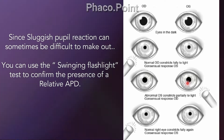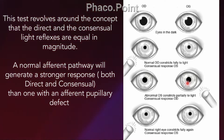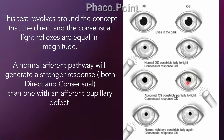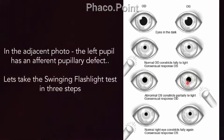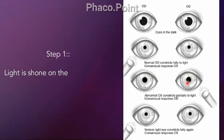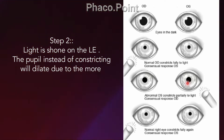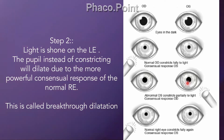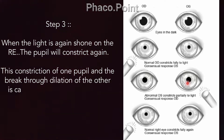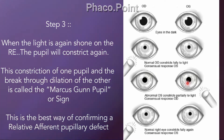Since sluggish pupillary reaction can be difficult to detect, we use the swinging flashlight test to confirm the presence of RAPD. This test is based on the concept that the direct and consensual light reflexes are equal in magnitude. Step one: light shown on the normal pupil produces brisk constriction of both pupils. Step two: light shown on the affected left eye causes the pupil to dilate instead of constrict, due to the more powerful consensual response of the right eye — this is called breakthrough dilatation. Step three: light returned to the right eye causes constriction. This constriction and breakthrough dilatation pattern is called the Marcus Gunn pupil or Marcus Gunn sign.